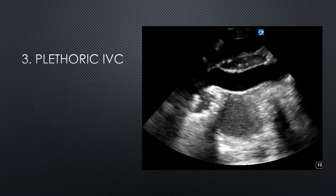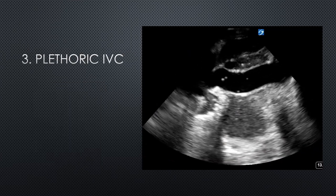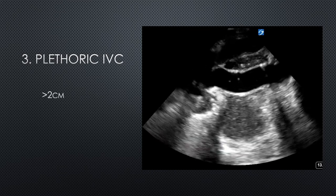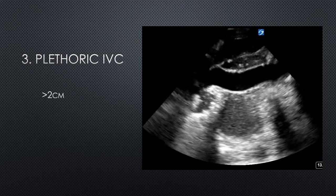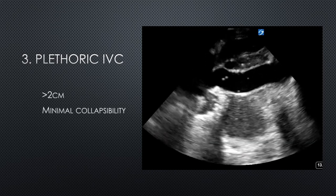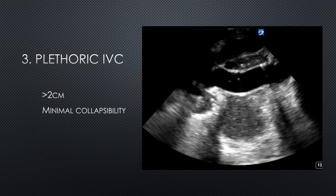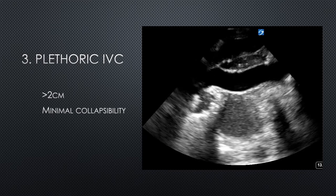Here is an example of a plethoric IVC. The IVC is more than two centimeters in diameter, and there's minimal respiratory variation or collapsibility.